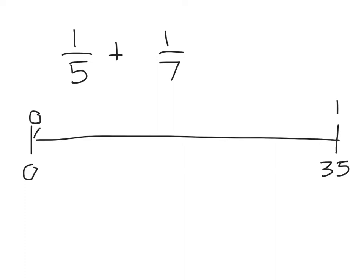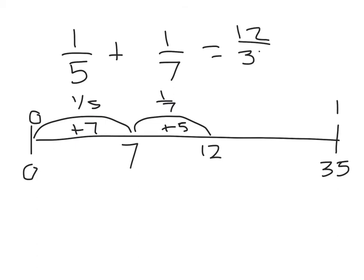We're going to first travel one-fifth of the distance. What is one-fifth of thirty-five? Well, it's seven. And then we're going to travel another seventh of the distance. One-seventh of the trail would be five more kilometers or miles or whatever. Seven plus five is going to get you twelve. This person has gone twelve thirty-fifths of the trail, or the answer to one-fifth plus one-seventh is twelve thirty-fifths.